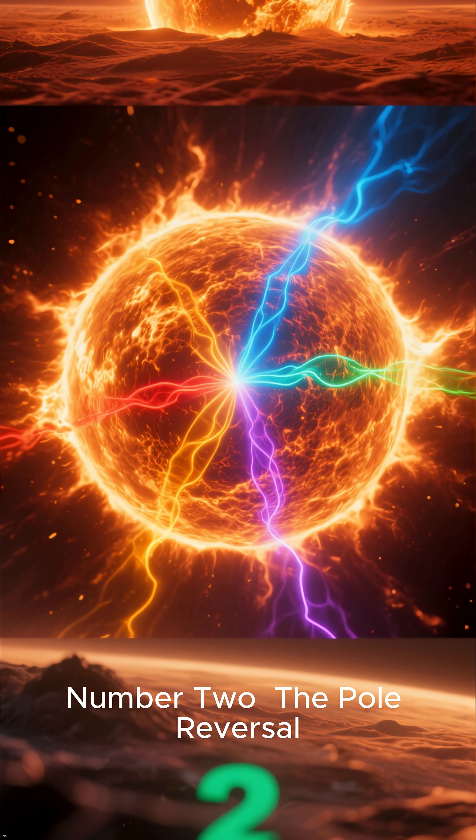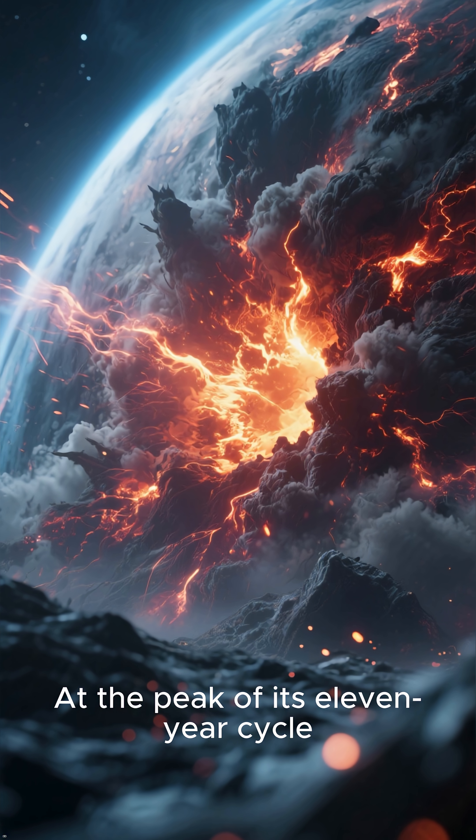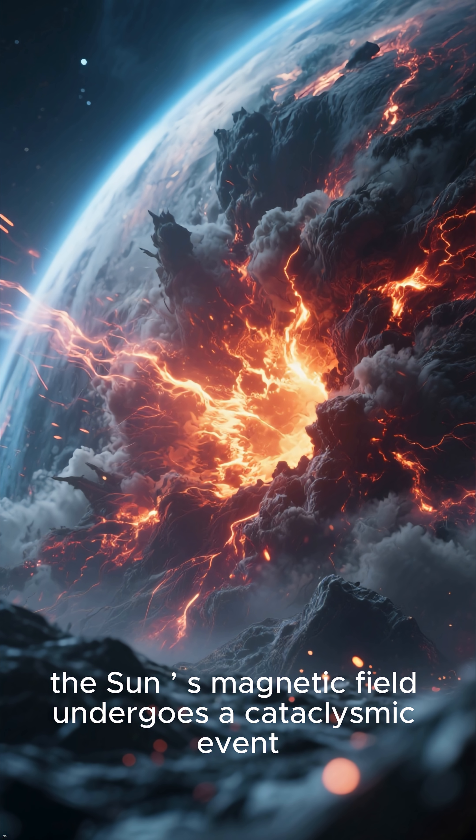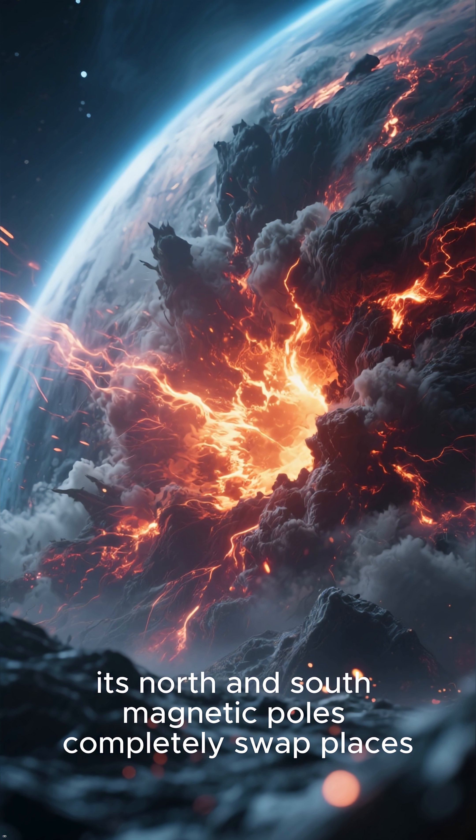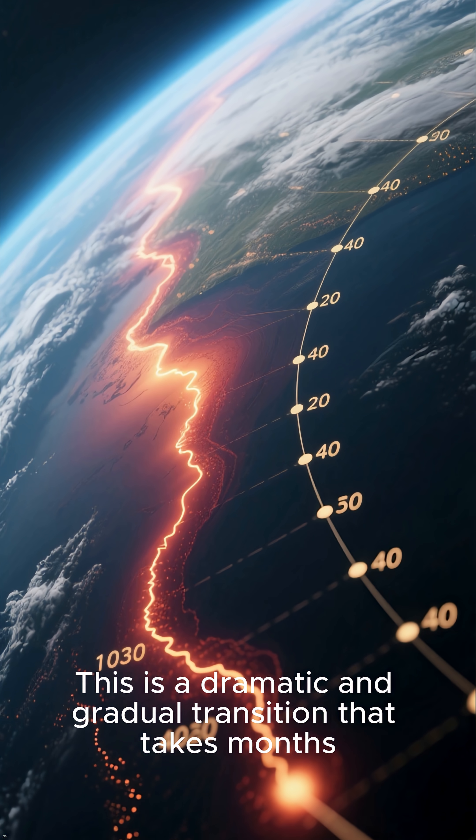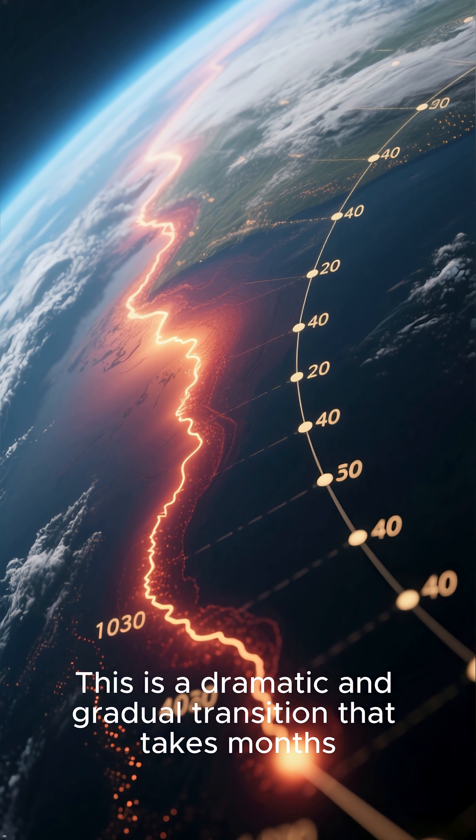Number 2: The Pole Reversal. At the peak of its 11-year cycle, the sun's magnetic field undergoes a cataclysmic event. Its north and south magnetic poles completely swap places. This is a dramatic and gradual transition that takes months.